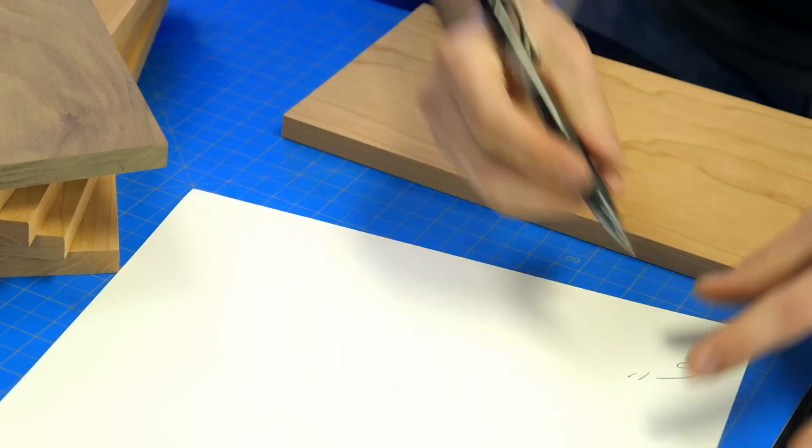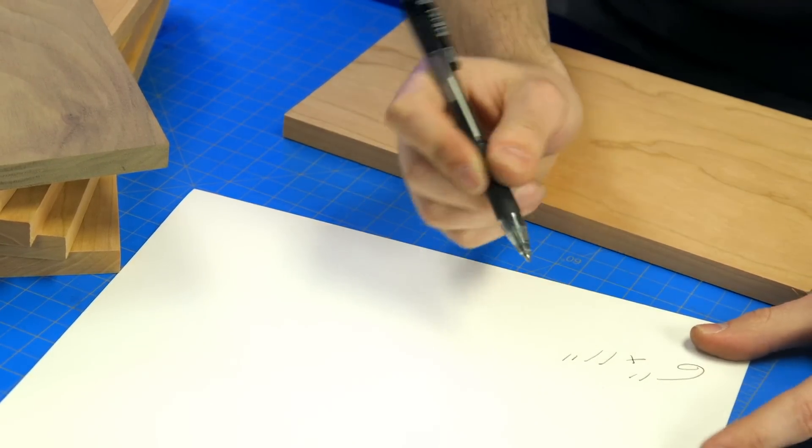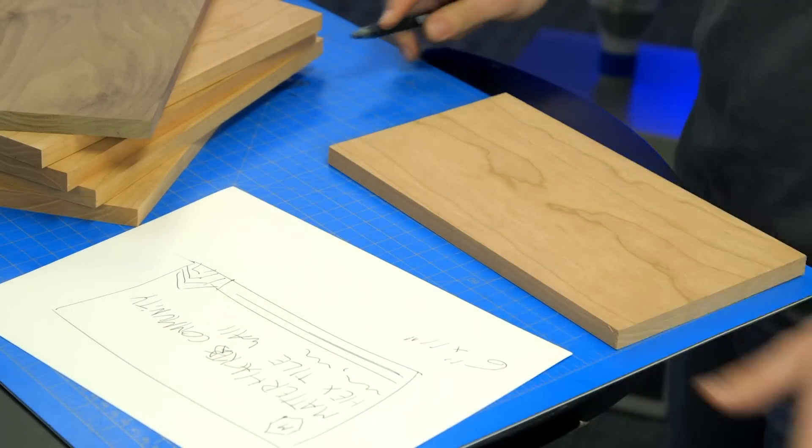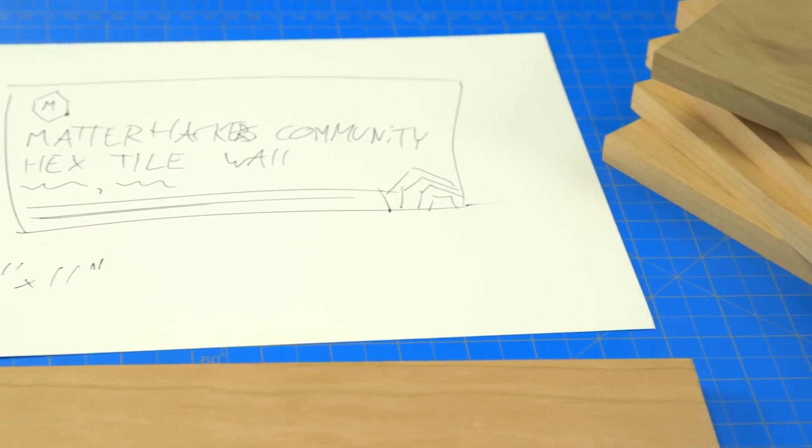I started out by measuring the rough dimensions of the piece of wood, 6 inches by 11 inches, and then doing a rough sketchup of what we'd want this to look like, having it say Matterhackers community Hextile Wall and some graphics here and there.